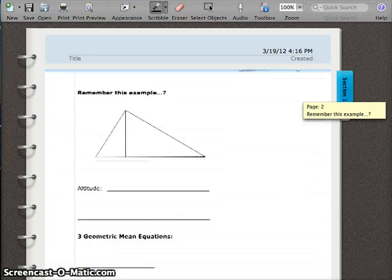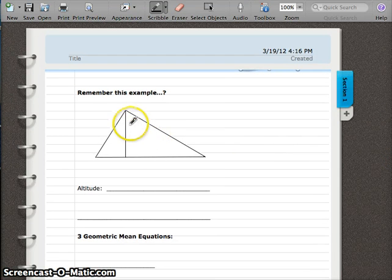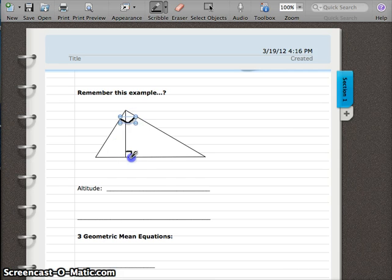All right, so let's apply the geometric mean now to finding a missing side of a right triangle. So if you have this example, we have a right triangle and this thing right here is called an altitude.